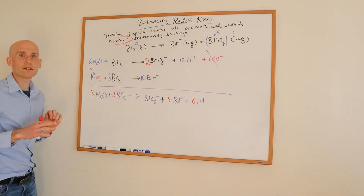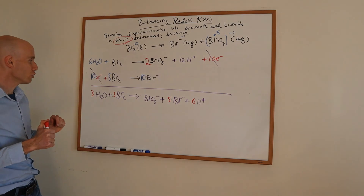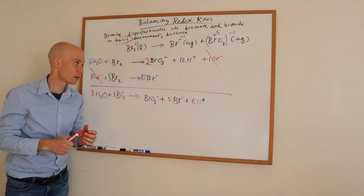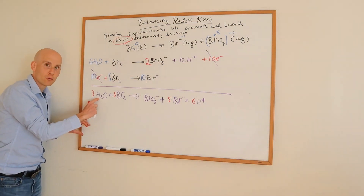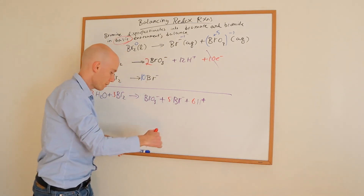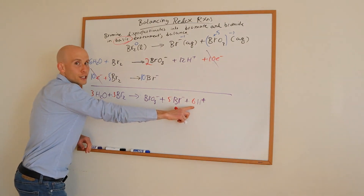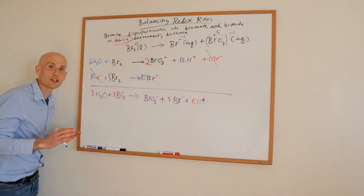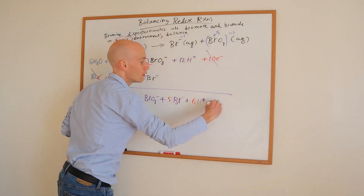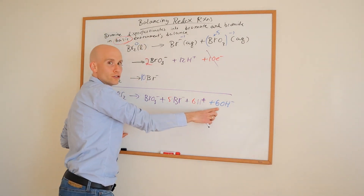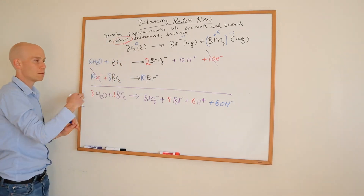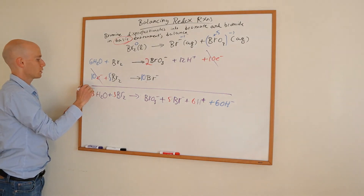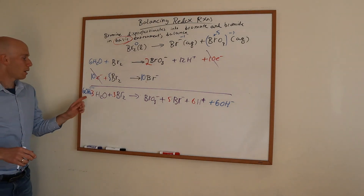For the basic modification: for each H⁺ in the equation — I have 6 H⁺ here — I add six hydroxide ions to offset them. I also add six OH⁻ to the other side to keep it balanced. The H⁺ and OH⁻ on the same side will combine to form water, which we then simplify.